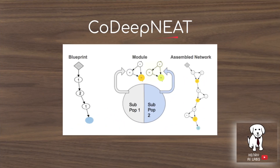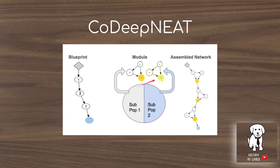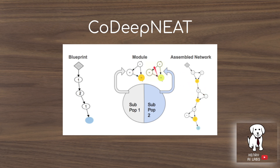CoDeepNEAT is a way of combining the blueprint, which is the macro design, with the microarchitectures — the modules. The blueprint defines the connections of the network, and each connection points to a member of the module population. So one connection maps to module one, another maps to module two, and overall each structure in the blueprint is sampled from the corresponding module species to form the assembled network.